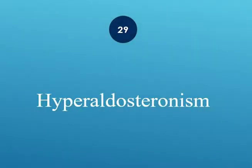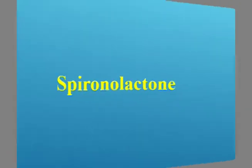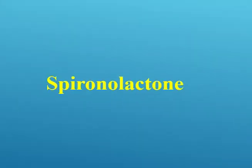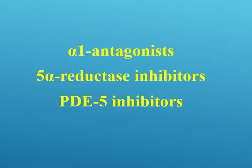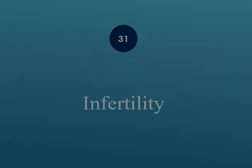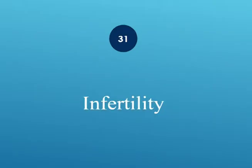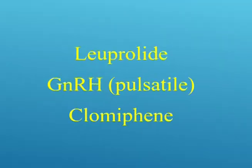Hyperaldosteronism: use spironolactone. Benign prostatic hyperplasia (BPH): treated with alpha-1 antagonists, 5-alpha-reductase inhibitors, and PDE5 inhibitors. Infertility: use leuprolide, GnRH pulsatile, and clomiphene.